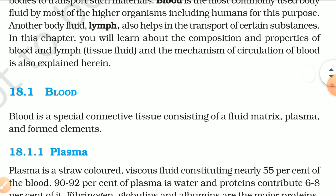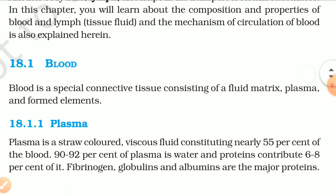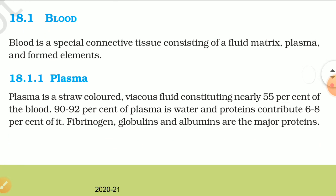18.1 Blood. Blood is a special connective tissue consisting of a fluid matrix, plasma, and the formed elements. 18.1.1 Plasma. Plasma is a straw-coloured viscous fluid constituting nearly 55% of the blood. 90–92% of plasma is water, and proteins contribute 6–8% of it. Fibrinogen, globulins, and albumins are the major proteins.